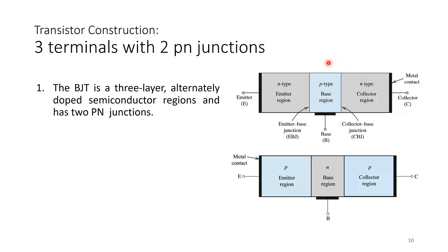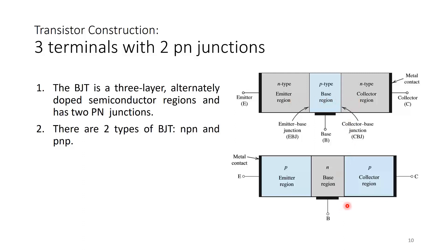For an NPN BJT, the emitter and collector are doped with donor atoms making them N-type, while the base is doped with acceptor atoms making it P-type. Between emitter and base is one PN junction with one depletion region, and between base and collector is another PN junction with another depletion region. There are two types of BJT: NPN and PNP. In PNP, the emitter and collector are doped with acceptor atoms and the base with donor atoms.